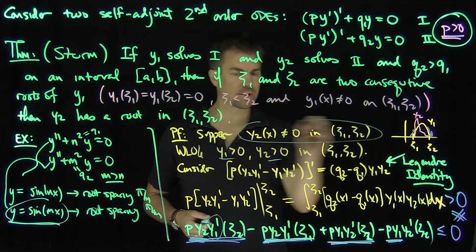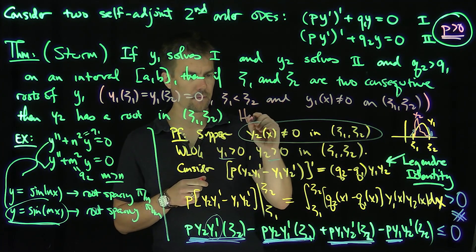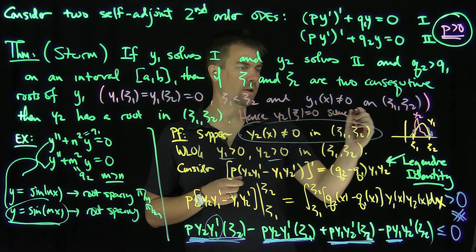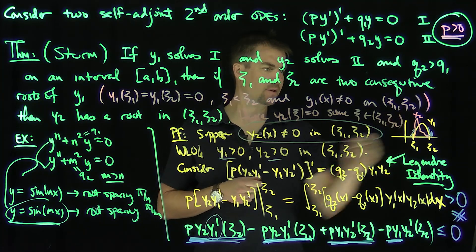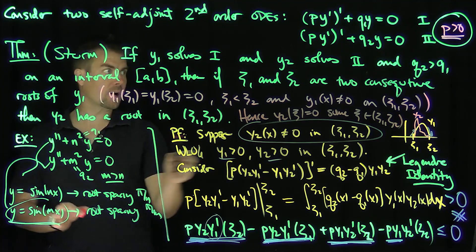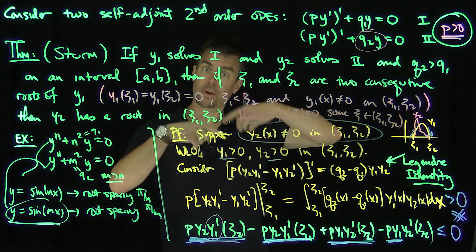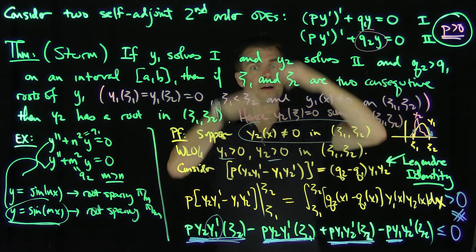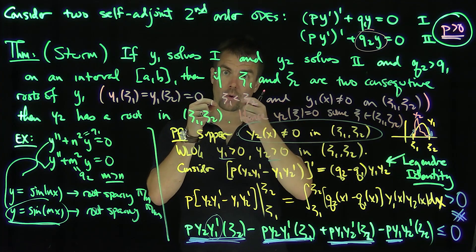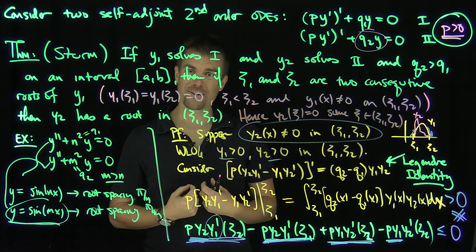This contradiction shows that y2 must vanish somewhere in that interval. Hence y2(xc) = 0 for some xc in (ζ1, ζ2). It follows from the Legendre identity that if Q2 is bigger — meaning more oscillation — then the roots of y1 must intersperse with the roots of y2, because y2 oscillates more than y1. Thank you very much.